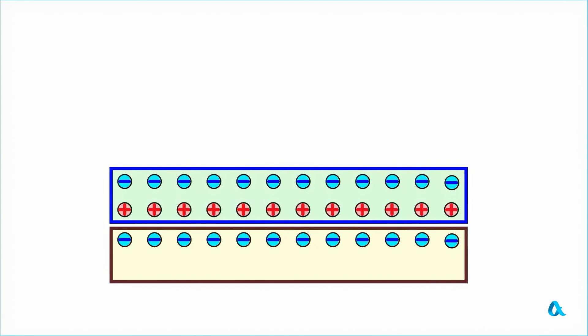At the same time, the total charge of the metallic plate remains zero, because the charge from the plastic hardly transfers to the metal.